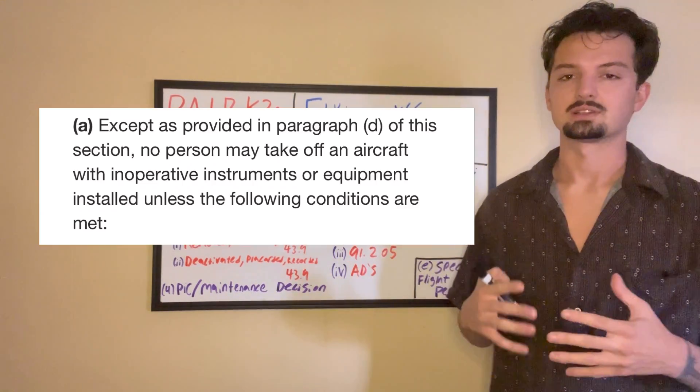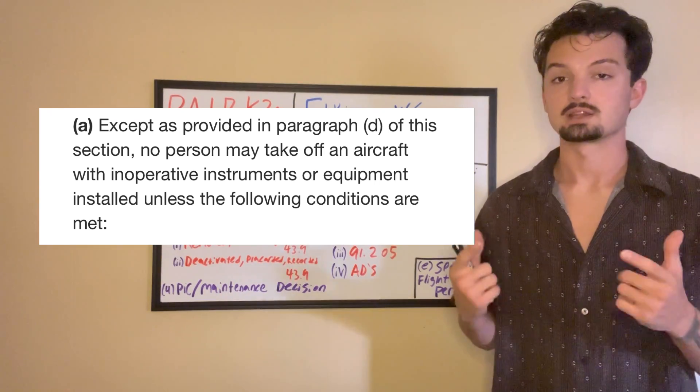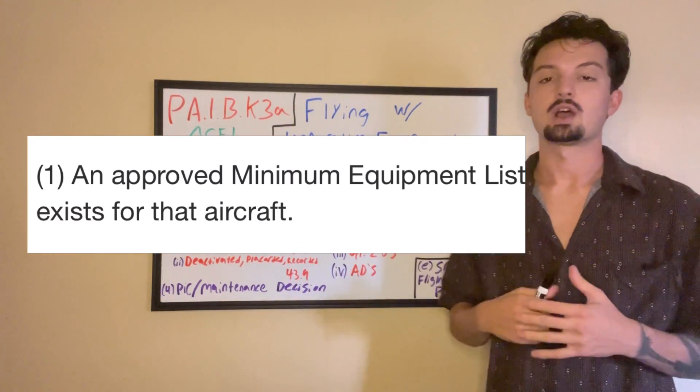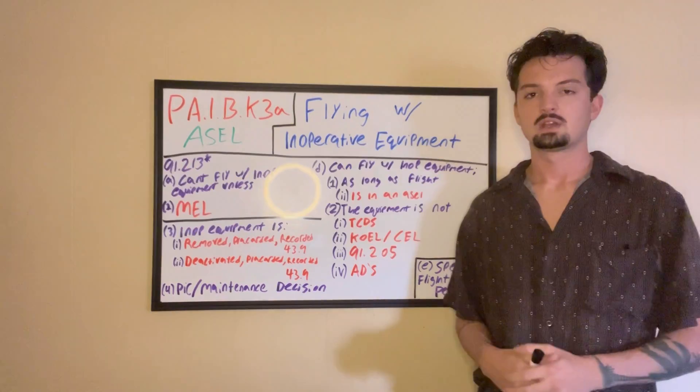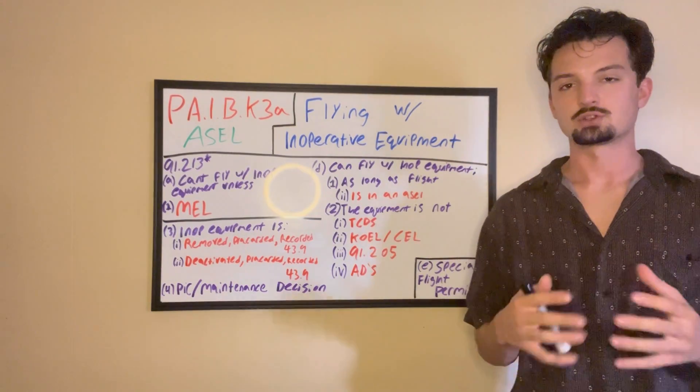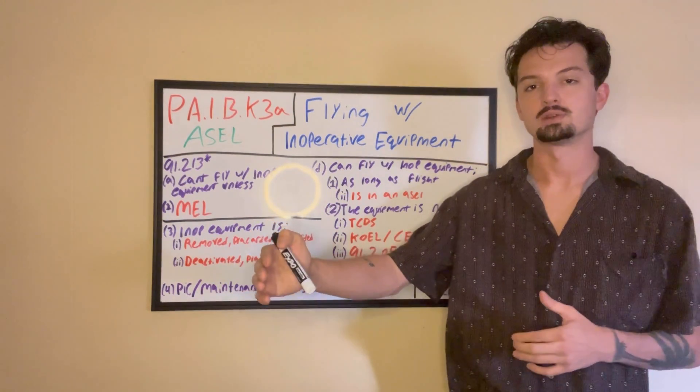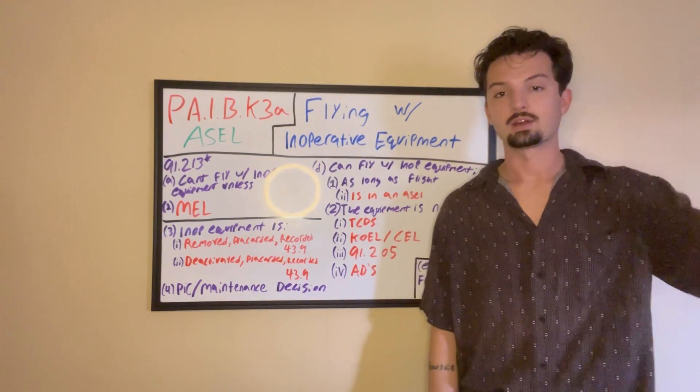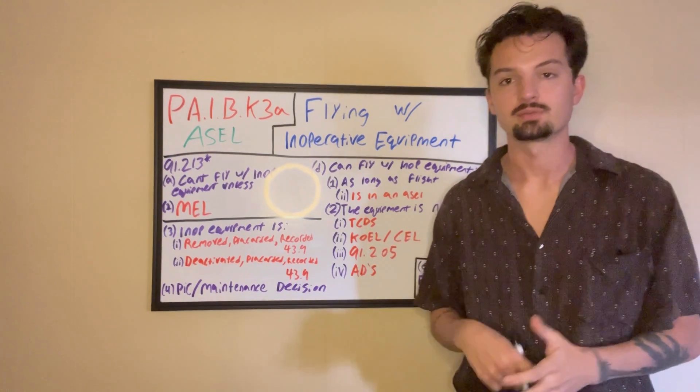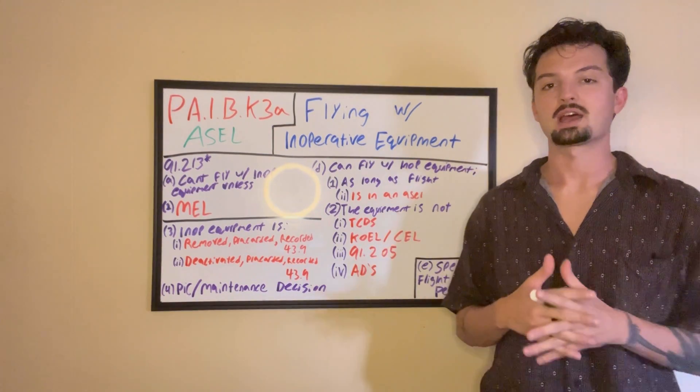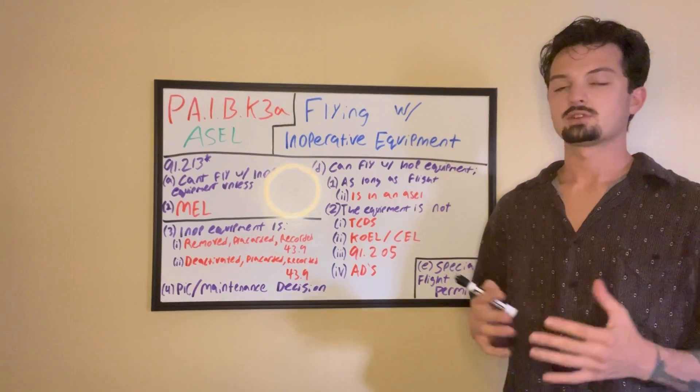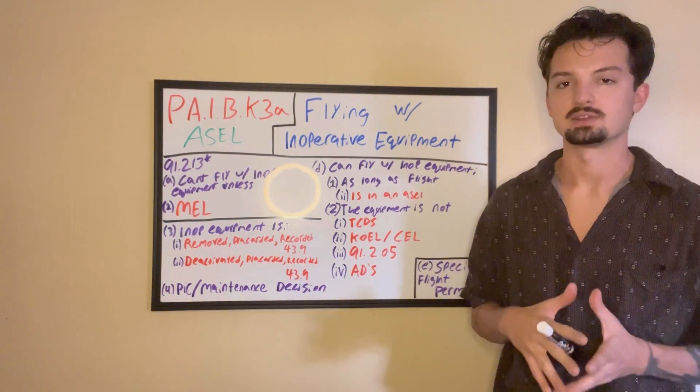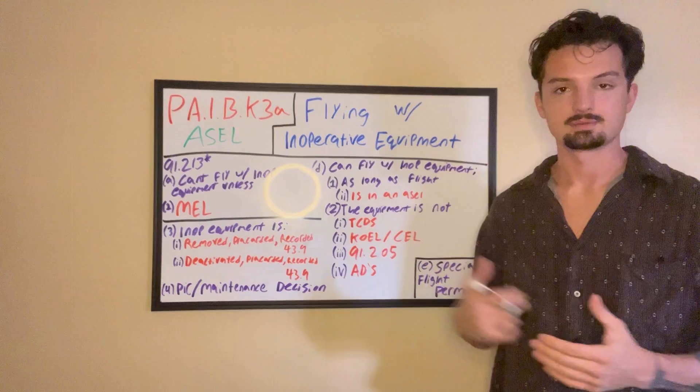So starting off, we've got Alpha, and that states that we can't fly with inoperative equipment unless... And then we get to the next part, the number one, which is unless you have an M.E.L., or a minimum equipment list. And this is where I'm trimming some information because as a student pilot, your aircraft that you're flying is not going to have a minimum equipment list. This is usually going to be the case for big operations like airliners and cargo operations, but flight schools with little single-engine airplanes do not have their own minimum equipment list, usually.